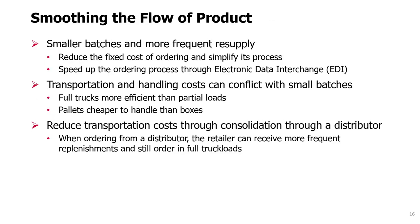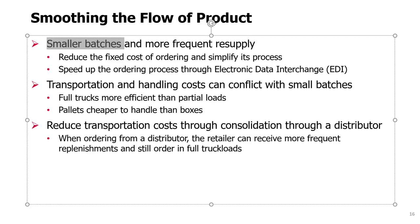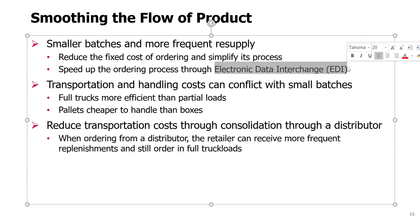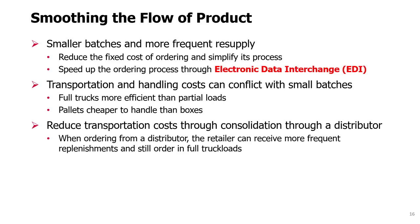The second strategy to reduce the bullwhip effect is to smooth the flow of product. That can be done by replenishing inventory more frequently and in smaller batches. We need to work on reducing fixed costs of ordering and simplifying the ordering process so that smaller batches can be processed without much effort. A good idea is to use Electronic Data Interchange (EDI), which exchanges order information between supplier and consumer through computerized systems in an automated way with minimal human involvement — speeding it up and making it cheaper.